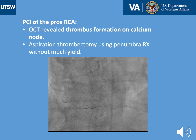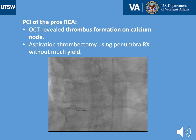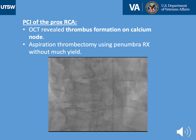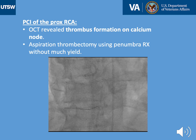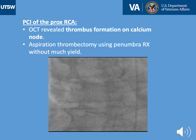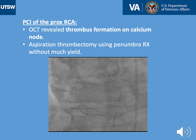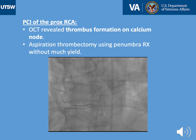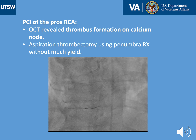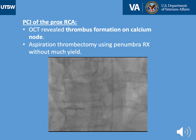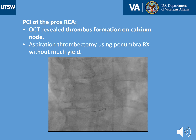As shown on the previous angiogram, there was diffuse calcification of the RCA, and the differential diagnosis for the filling defect in the mid-RCA could be thrombus formation on one hand, or significant severe calcification on the other hand. The differentiation between these two entities is very essential in terms of procedure planning and approach.